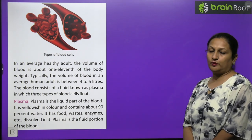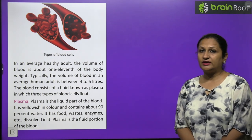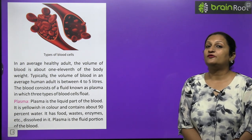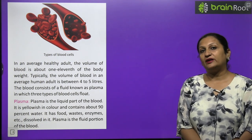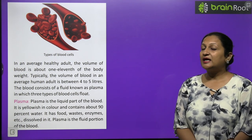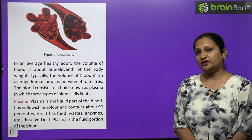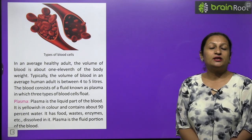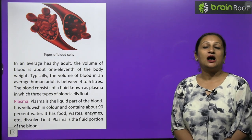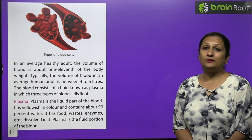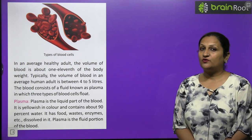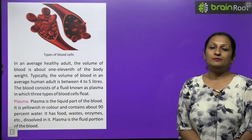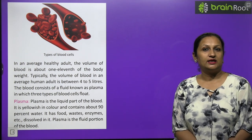Blood is in liquid form because of the presence of a fluid called plasma. Plasma is yellowish in colour and contains about 90% water. All blood cells — red blood cells (RBCs), white blood cells (WBCs), and platelets — are suspended within plasma.